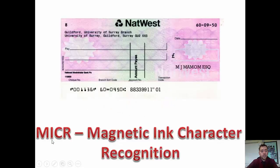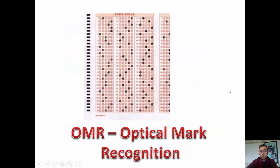If you see MICR, or Magnetic Ink Character Recognition, it's the numbers along the bottom of a cheque. It uses magnetic ink, and when read with an MICR reader, it can identify those numbers because it has magnets that read what's on the paper.